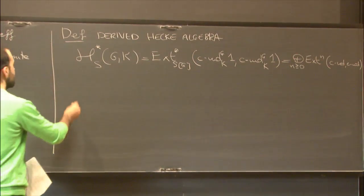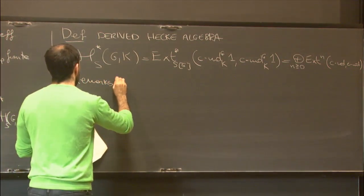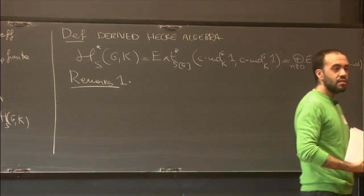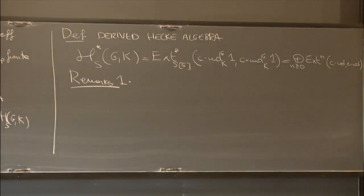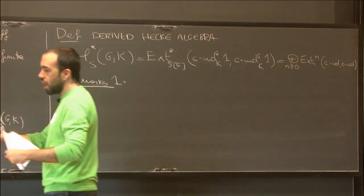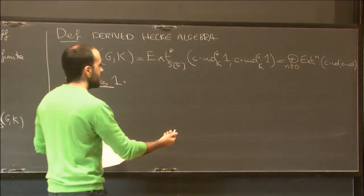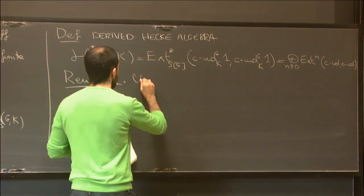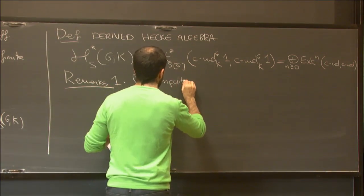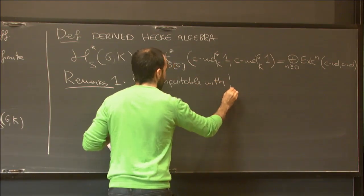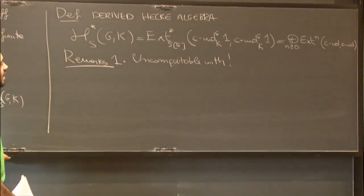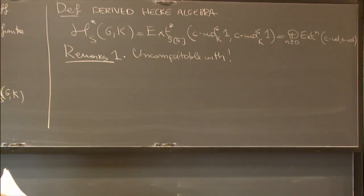Let me make a few remarks about this definition. The first remark is that if you recall how you define these Ext groups, what you need to do is replace your representation by an injective resolution and then compute Hom spaces between these injective resolutions. This is very hard to do, so this is basically uncomputable with. That said, we will give an equivalent description in a moment that is much easier to deal with.